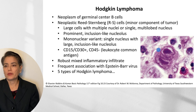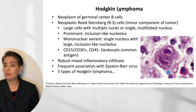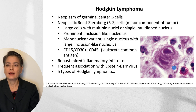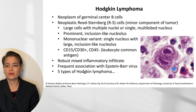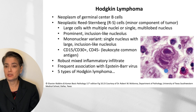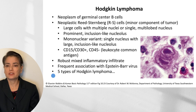Since Reed-Sternberg cells are only a small component of the tumor, what makes up the rest of the mass? It's a robust mixed inflammatory infiltrate. Even in a tightly cropped image, you can see an eosinophil approaching a Reed-Sternberg cell. Hodgkin lymphoma is frequently associated with Epstein-Barr virus, and we'll discuss the differences among the subtypes. There are five subtypes of Hodgkin lymphoma.